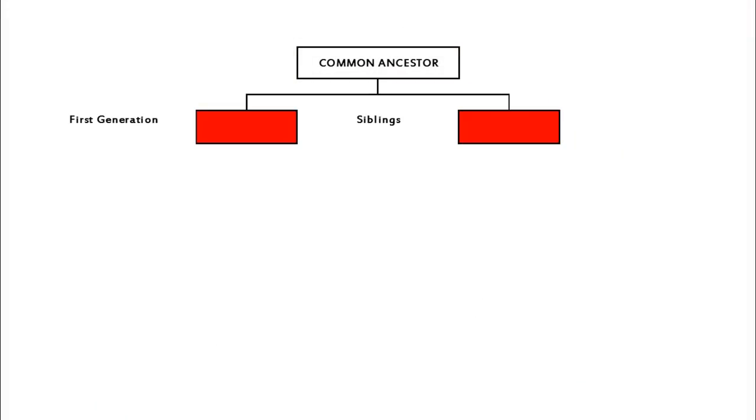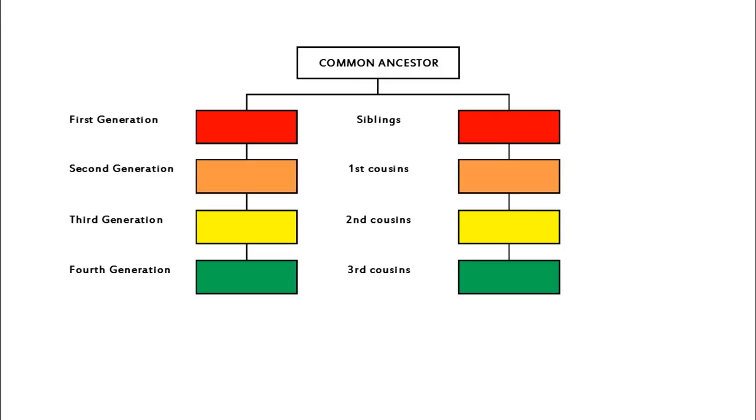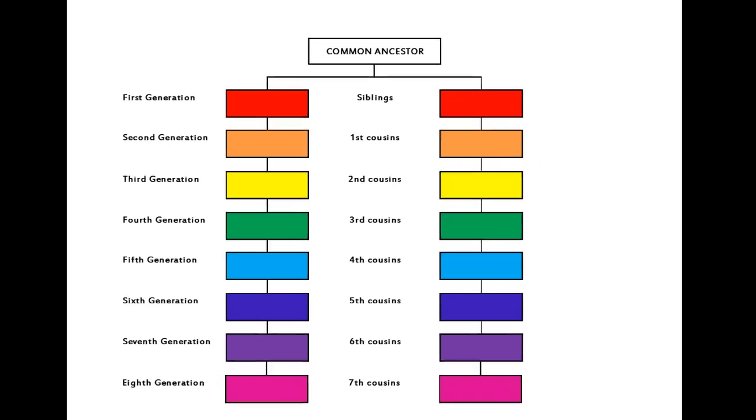Children of each sibling are first cousins. Continue descending on both lines to the next generation—these are second cousins. Children of second cousins are third cousins. Continue descending to the next generation on both lines to find fourth cousins, then fifth cousins, and so on.